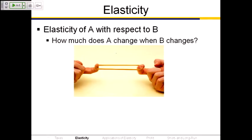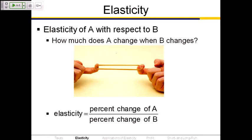If it was a really old rubber band, say one that's been in the drawer for 35 or 45 years, it would have very little elasticity — it would break. Brand new rubber bands tend to have a lot of elasticity. For economics, the way we calculate elasticity is by taking the percentage change of A and dividing it by the percentage change of B. The elasticity of A with regard to B is the percent change in A divided by the percentage change in B.